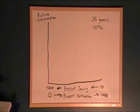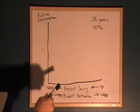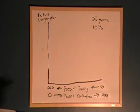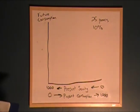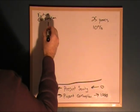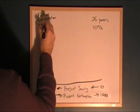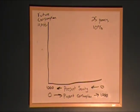If I were to save $1,000 at 10% interest for 25 years, after the magic of compound interest, we'd come up with $10,835. That's how much I'd have waiting for me in 25 years — not too shabby.